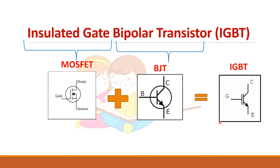The IGBT has the input characteristics of the MOSFET — it includes the gate terminal of the MOSFET — and the output characteristics of the BJT, that is the collector and emitter terminals. So it combines the advantages of both MOSFET and BJT.